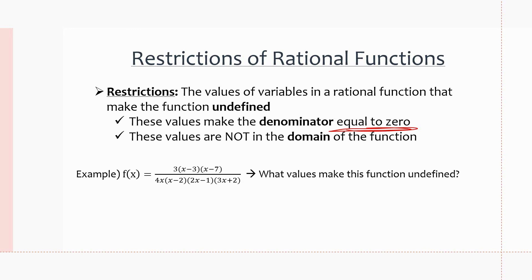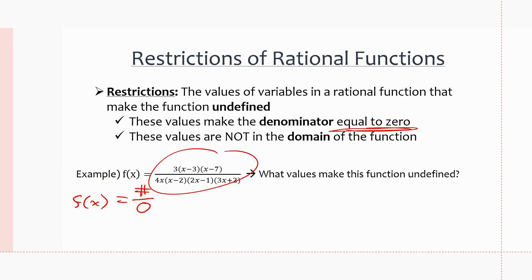Let's look at an example. We have f(x) = 3(x − 3)(x − 7) all over 4x(x − 2)(2x − 1)(3x + 2). The question asks: what values make this function undefined? We need to look for the x values that put this function in the form of a number over zero — so what values of x make the denominator zero?